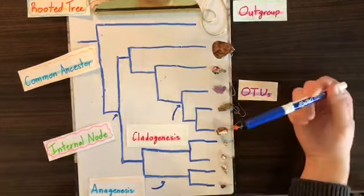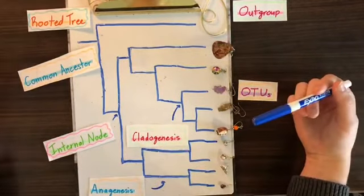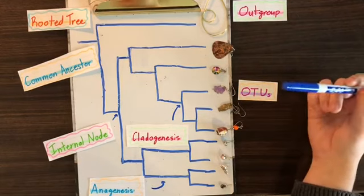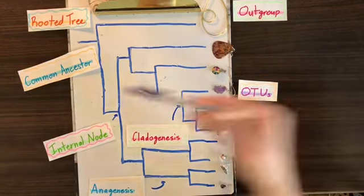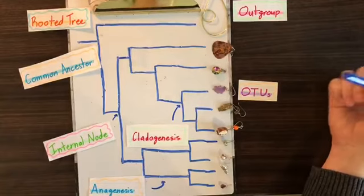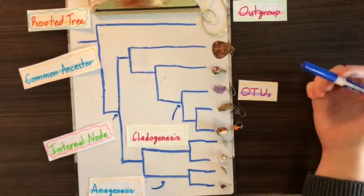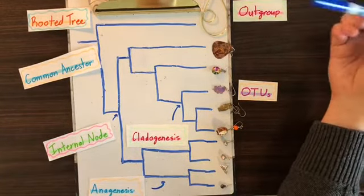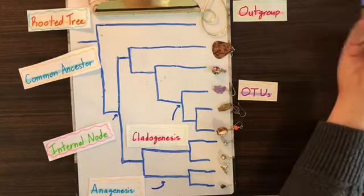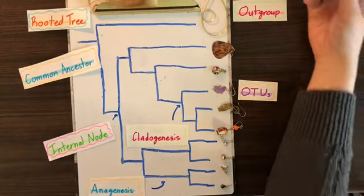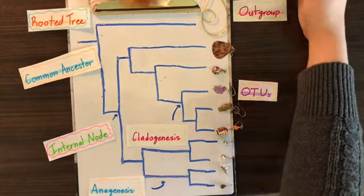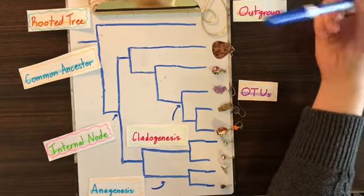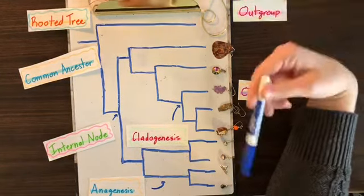Now this type of tree is called a rooted tree, meaning that we can see the order of divergence of the OTUs and we can point out a common ancestor between all of the OTUs. In order for us to have a rooted tree, we need an out group that connects all of the OTUs, or earrings in this case. So here we have this big dangly earring as our out group, and this out group has diverged much earlier than these other earrings.